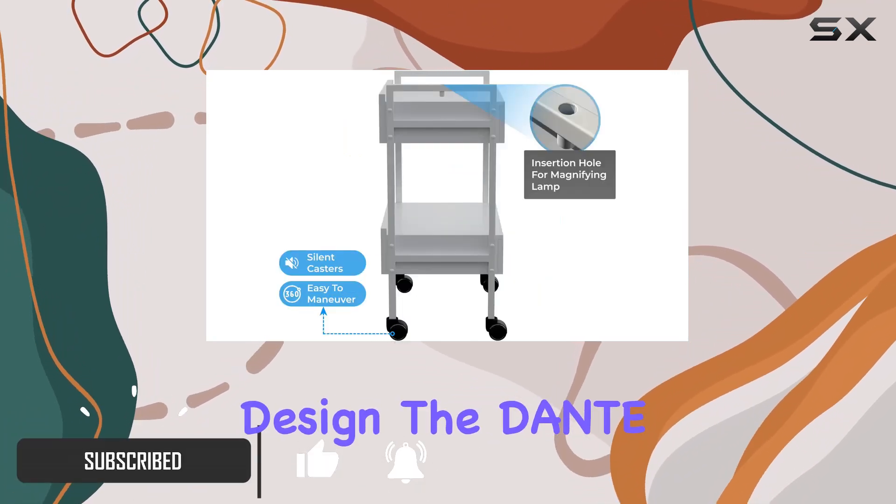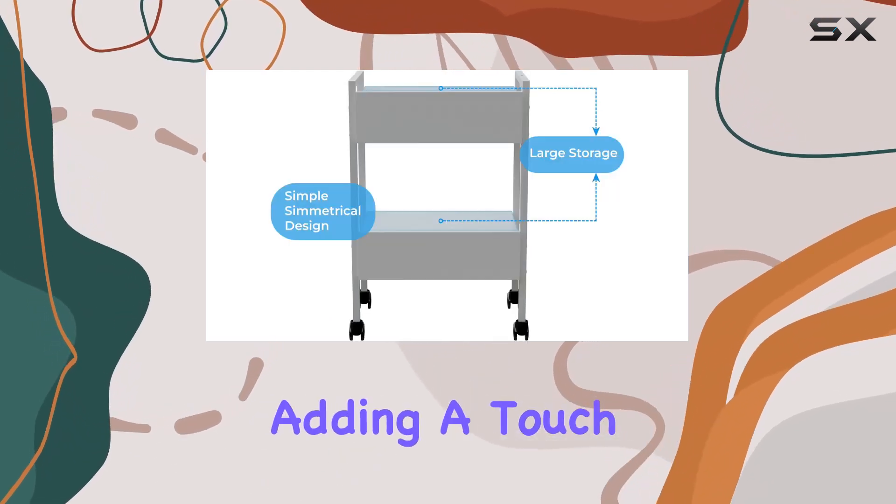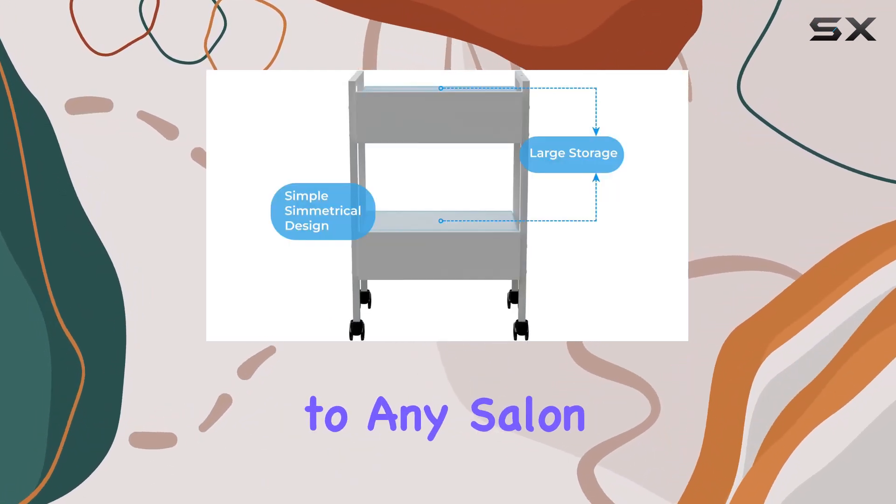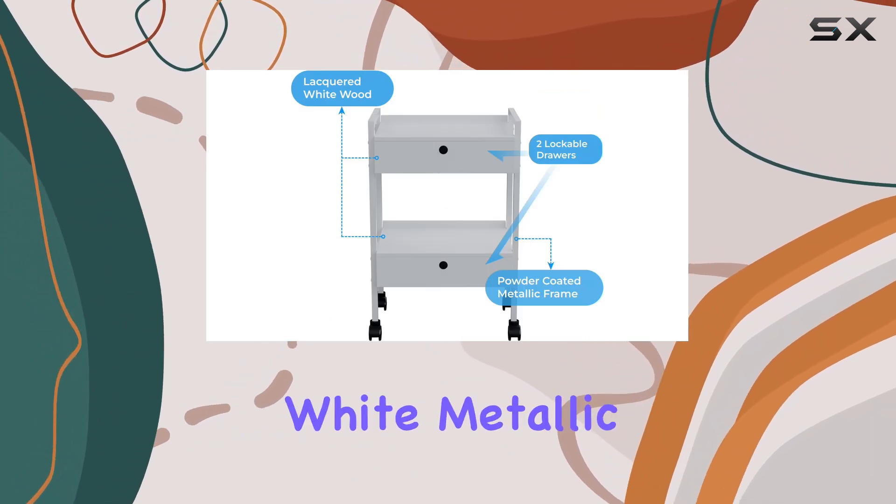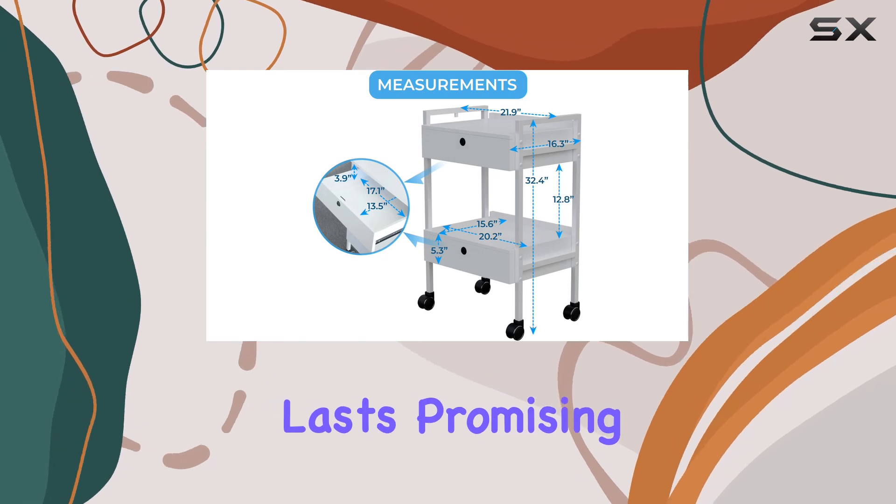Let's talk design. The Dante Deluxe features a clean and ergonomic design, adding a touch of sophistication to any salon or spa environment. Its powder-coated white metallic frame and lacquered white wood ensure durability that lasts, promising years of reliable service.